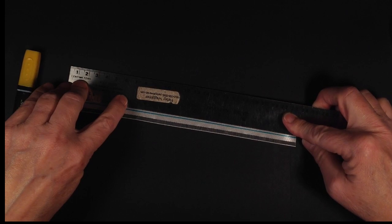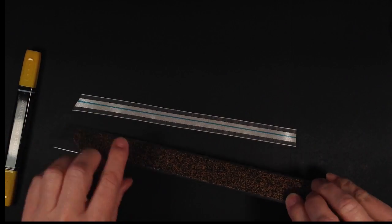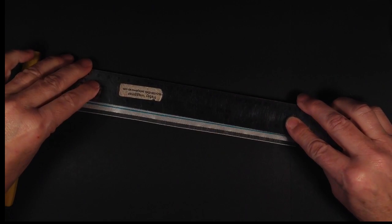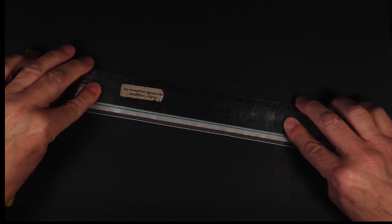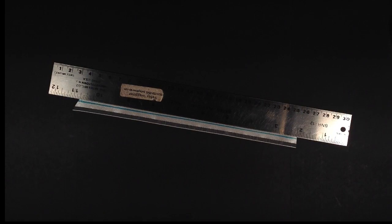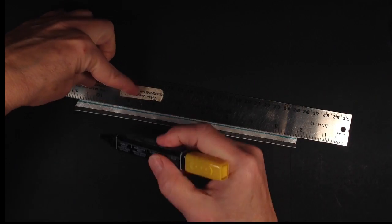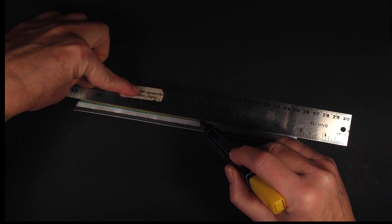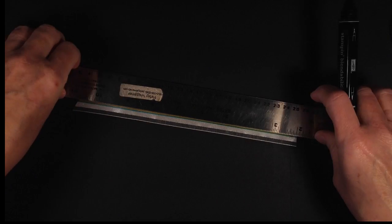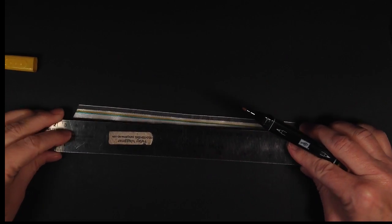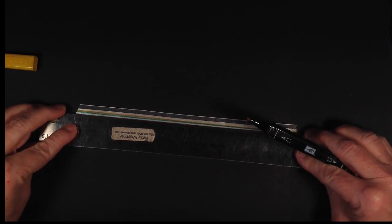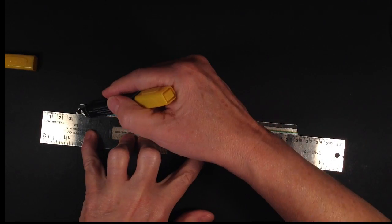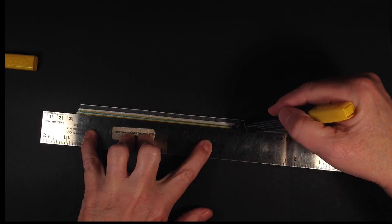Now I use a little cork back ruler which helps hold the ribbon in place as you're doing this. It doesn't slide around as much. There we go and now this side we're going to run this like that.